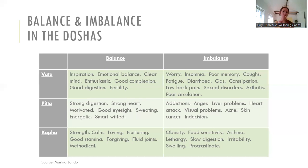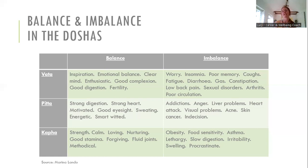When a Kapha person is in balance, we see a lot of calmness, loving and nurturing energy, good strength and stamina, forgiveness, fluid joints, and a very methodical nature. When out of balance, a Kapha person might be more prone to obesity, food sensitivities, slow digestion, lethargy, and irritability — and they can also be quite stubborn. Hopefully you're starting to see where you might be in balance or where you've come out of balance, and then the question is: what caused it and how do we come back?